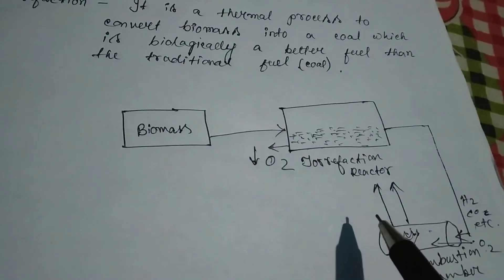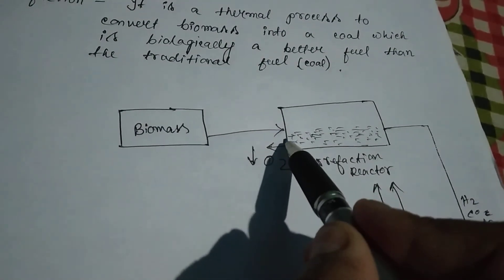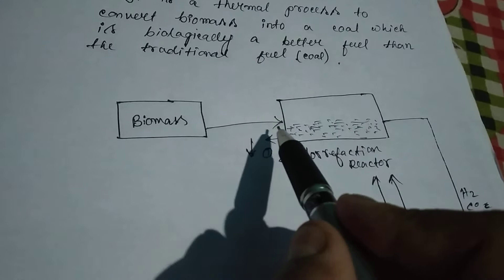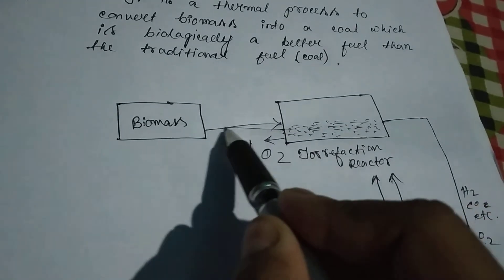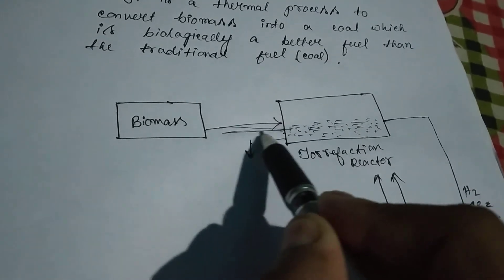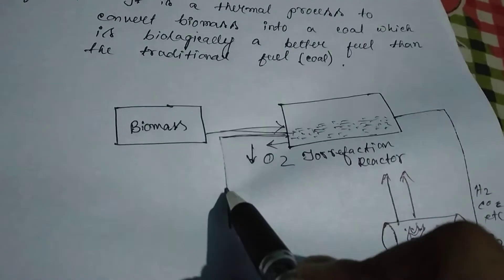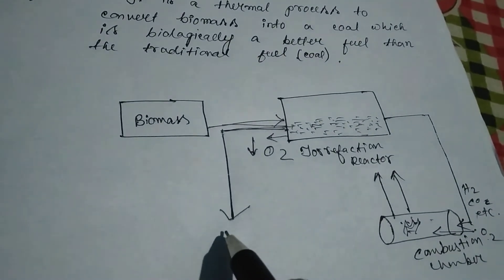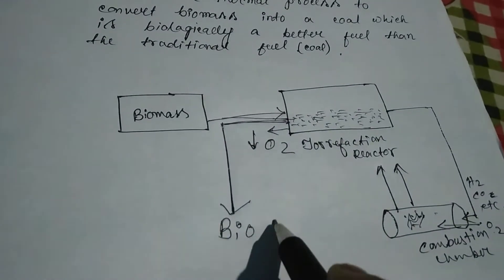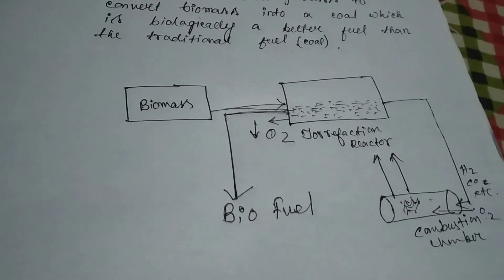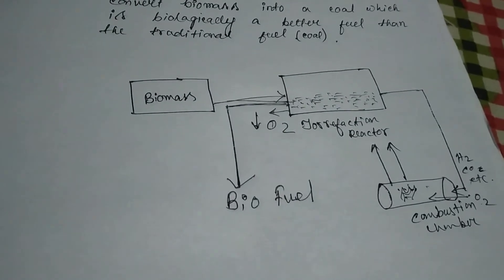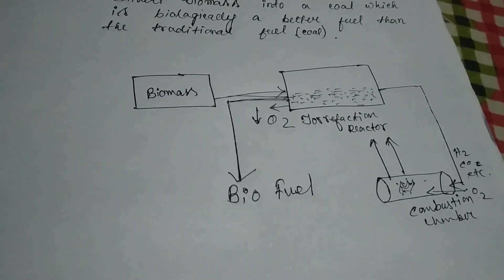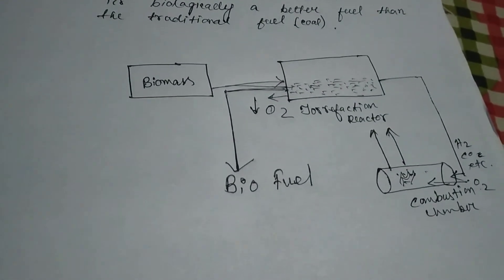Finally, when all the harmful gases get burnt, sulfur and the pure form of carbon dioxide come out from the reactor, and this fuel is known as biofuel, which is a very good product for the production of energy.